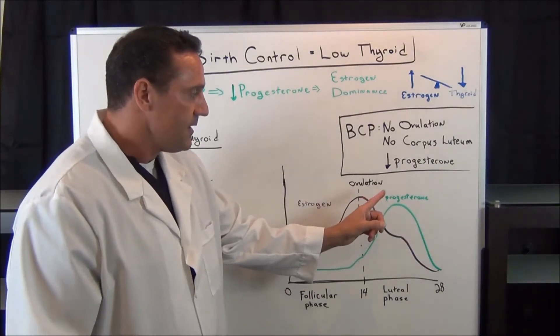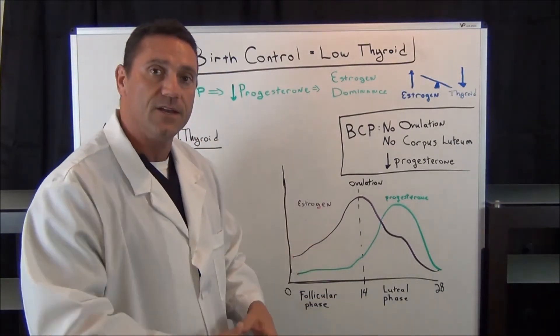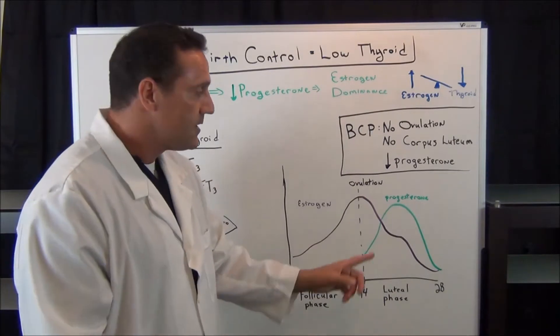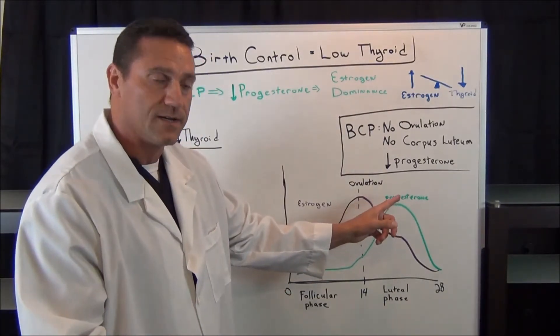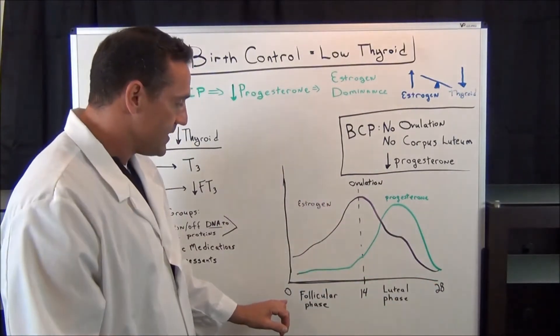Now progesterone breaks down to progestation. Because if you do get pregnant, you're going to create another human being inside the uterus. So that's where progestation comes along. However, if you don't get pregnant, you have your menstrual cycle and it all starts off from the very beginning.